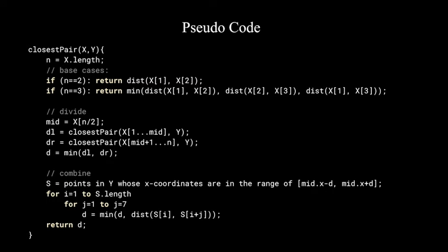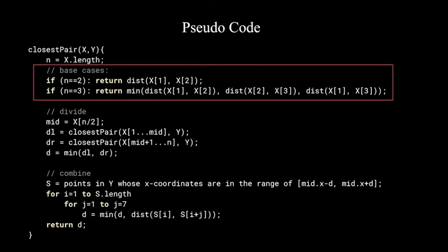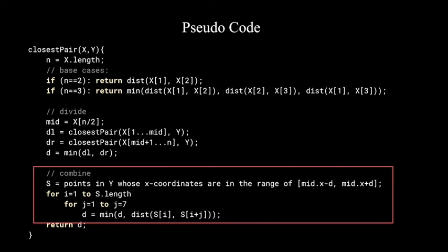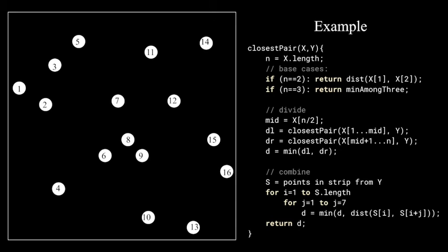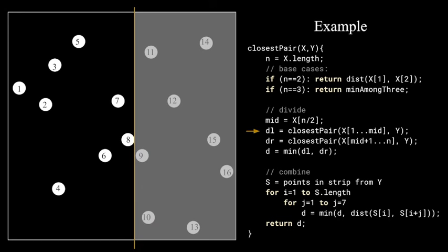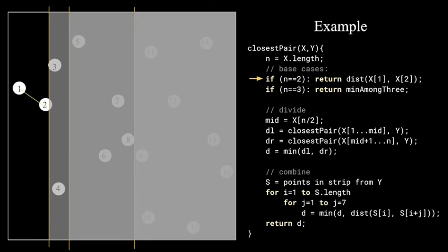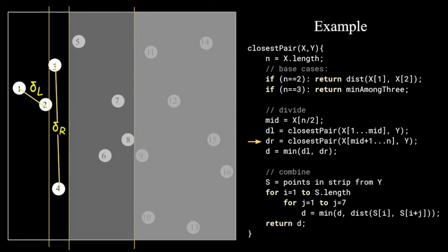So here is our pseudocode for the function. We have the base cases. We have the divide where we do the recursive cost and we combine. Let us walk through the previous example with the code. With our 16 points, we divide them in half and then recursively divide in half until we reach the base case.